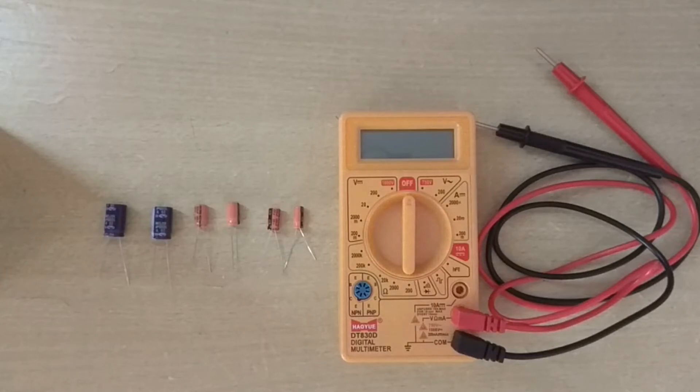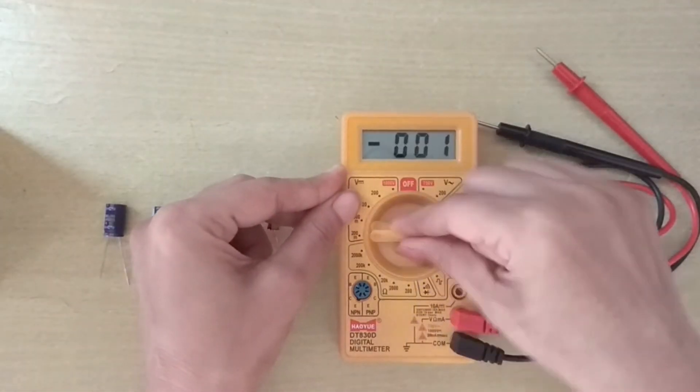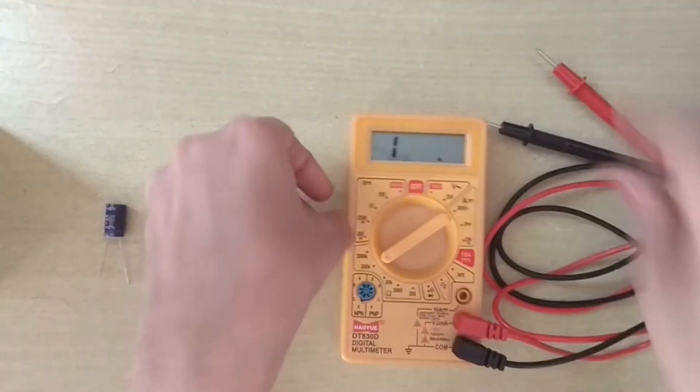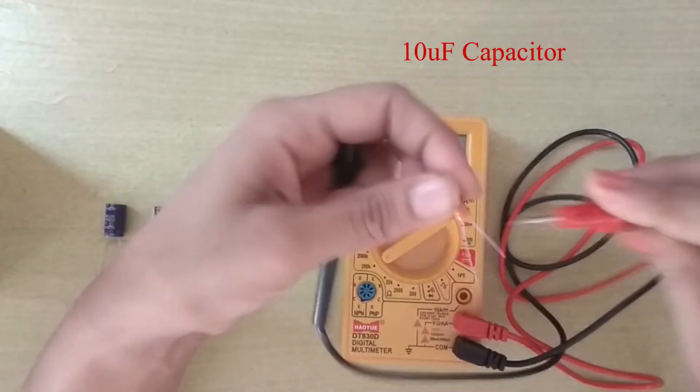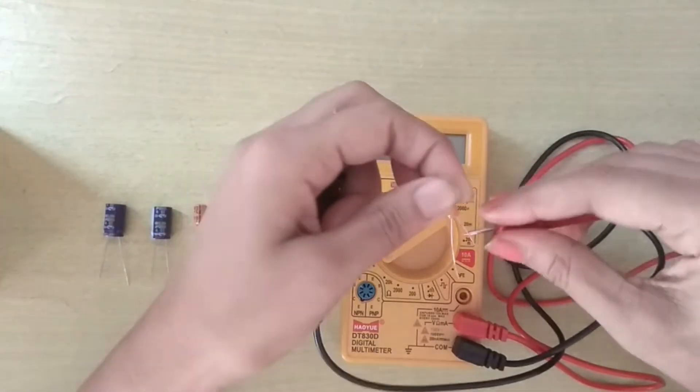Hello friends, today we'll learn how to check a capacitor using a multimeter. For capacitor checking, I place this knob in the 200k resistance range. First, I short the leads of the capacitor so if it's already charged, it gets discharged.